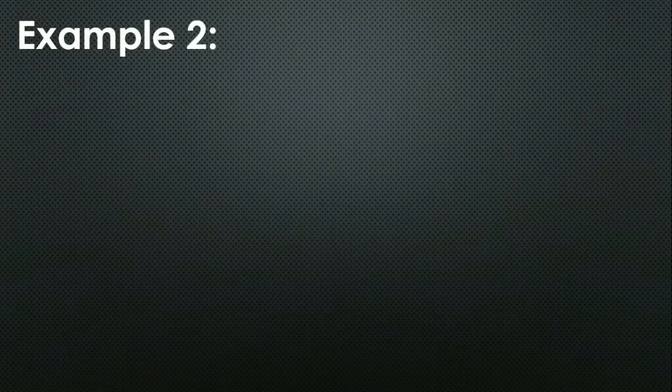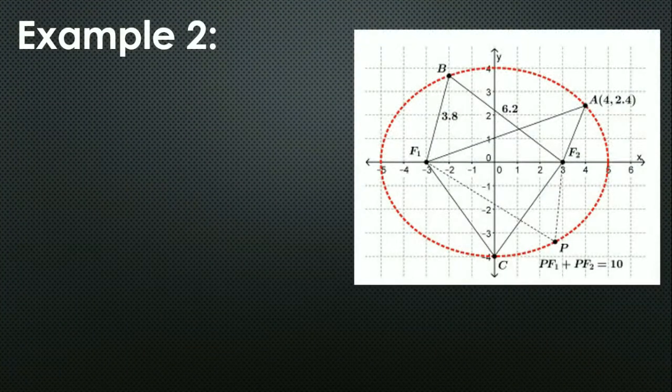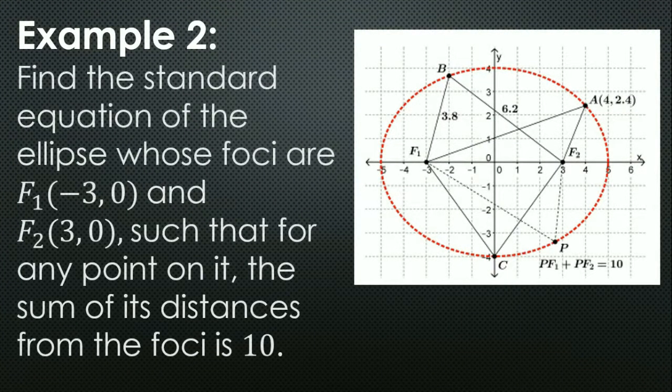Example 2: Find the standard equation of the ellipse whose foci are (−3, 0) and (3, 0), such that for any point on it, the sum of its distances from the foci is 10.